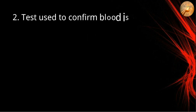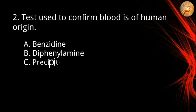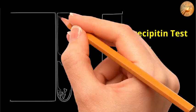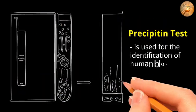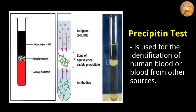Number two: test used to confirm blood is of human origin. A) benzidine, B) diphenylamine, C) precipitin, D) Marquis reagent. The correct answer is letter C, precipitin. The precipitin test is used for the identification of human blood or blood from other sources; it is a routine procedure in all forensic science laboratories.